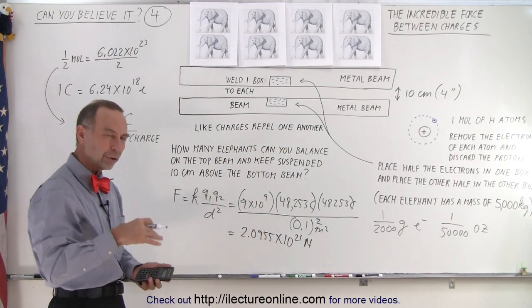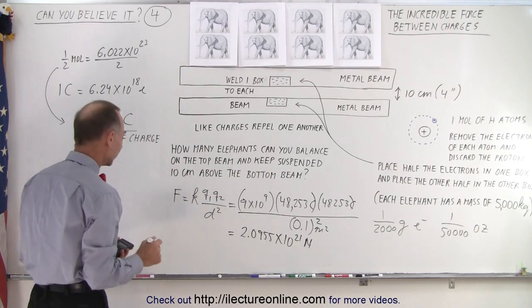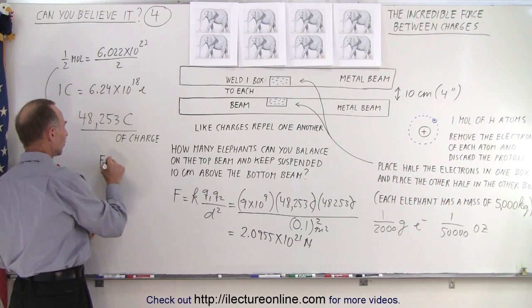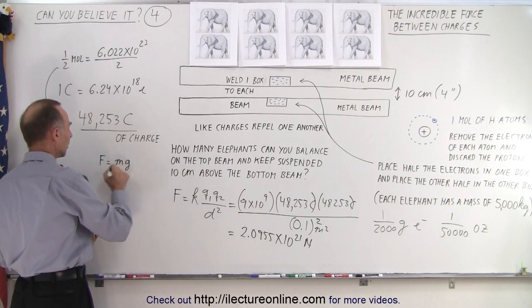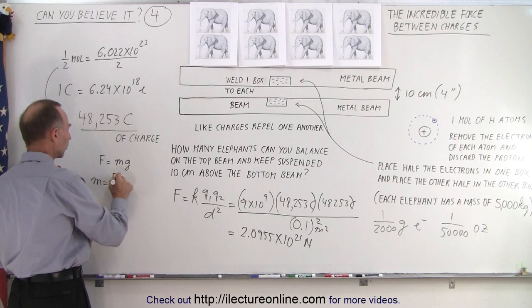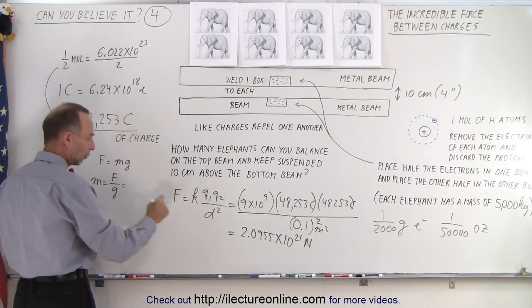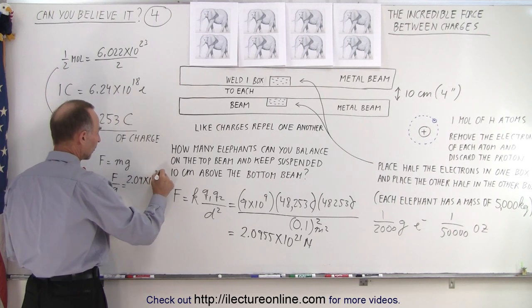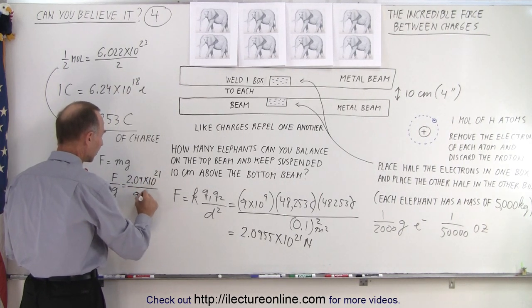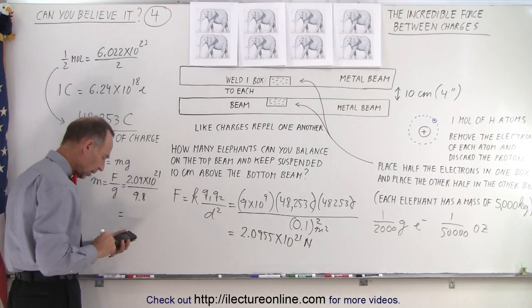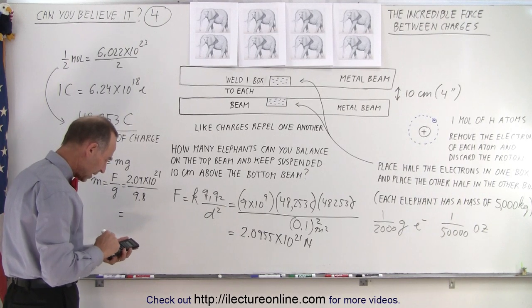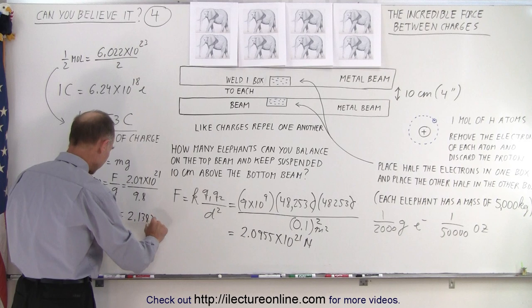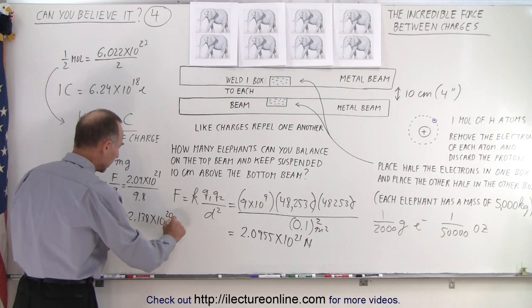Now we have to convert the force to mass, because we want to figure out how many elephants we need for that. We know that force equals mg. That means mass equals the force divided by g. So the force would be 2.09 times 10 to the 21st divided by g, which is 9.8 meters per second squared. So divide by 9.8, and we get 2.138 times 10 to the 20th kilograms.